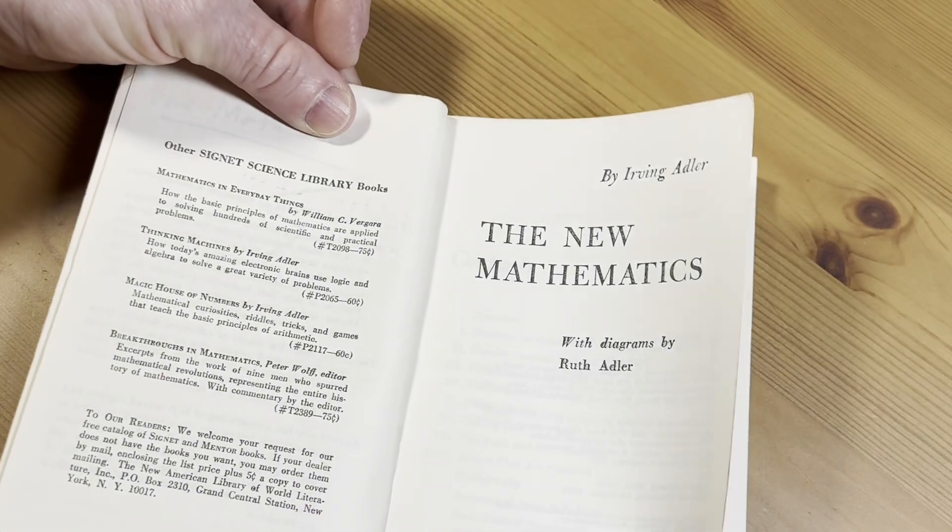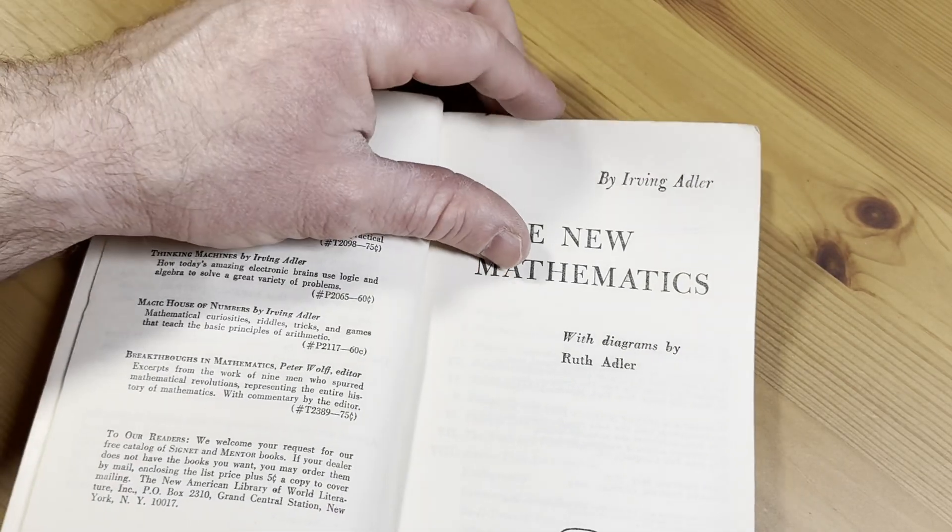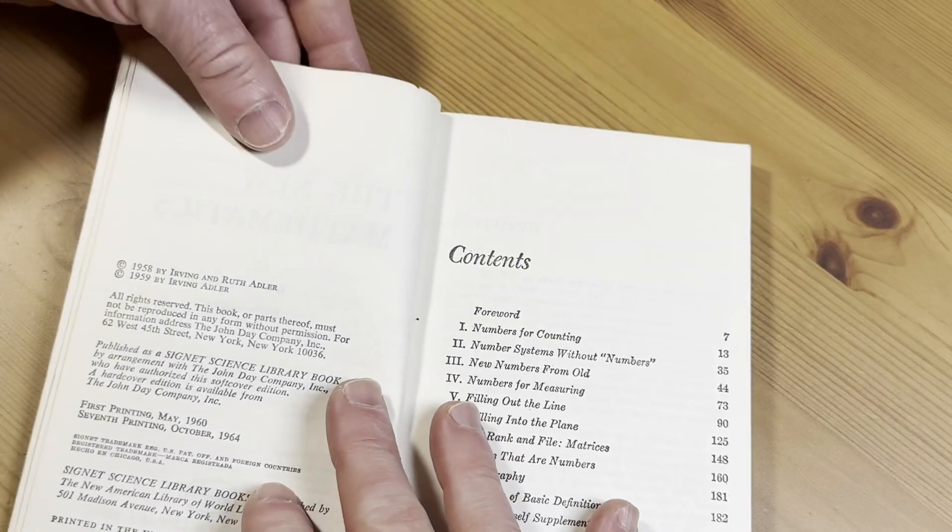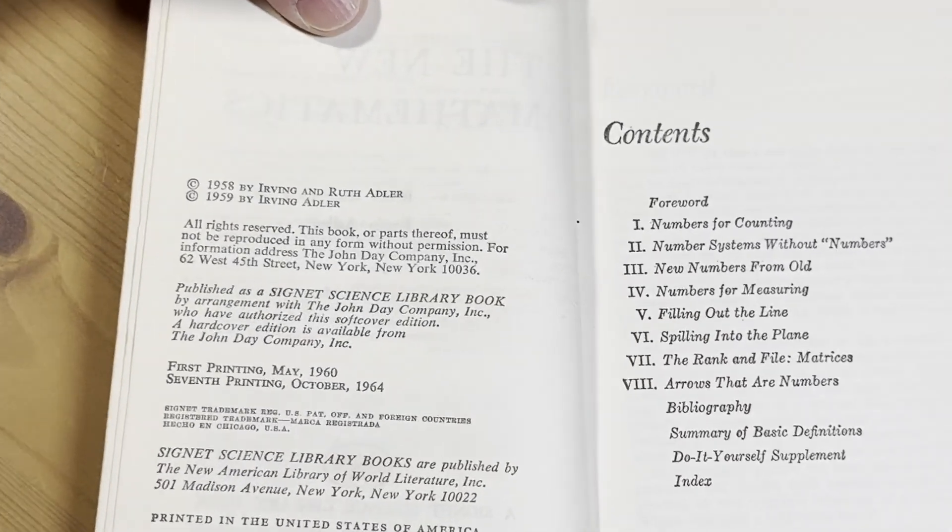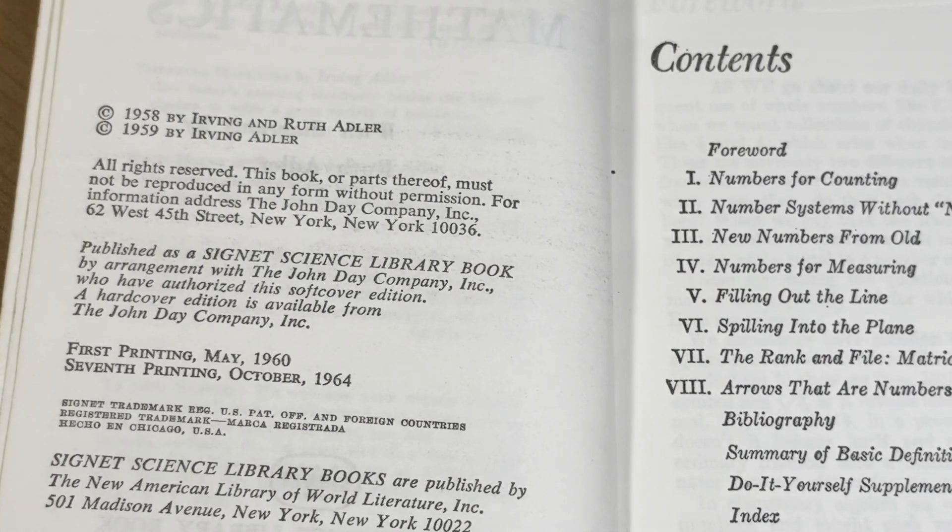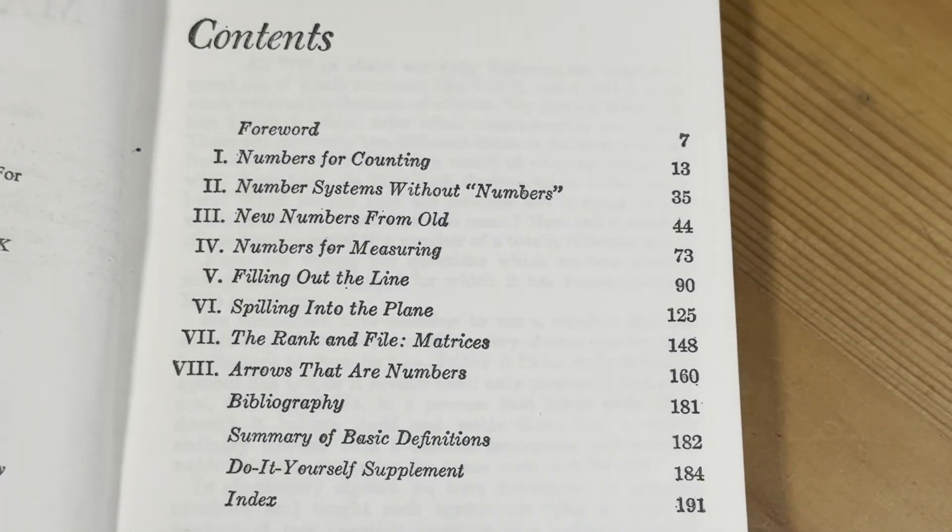The New Mathematics by Irving Adler with diagrams by Ruth Adler. And then here's the copyright. Look how old this is. This is really, really old, right? 1964.